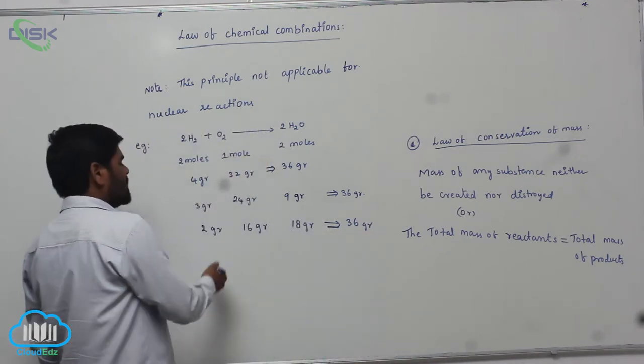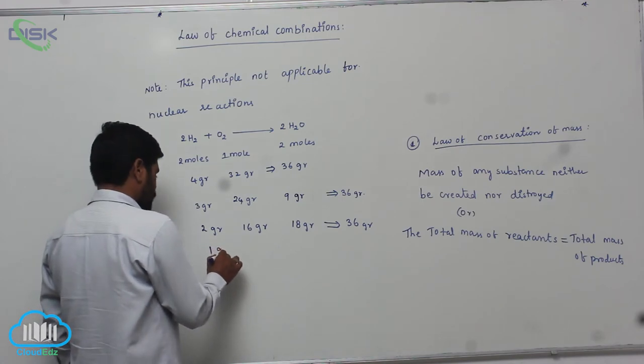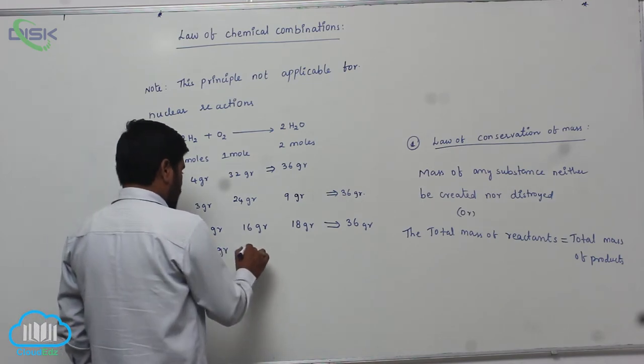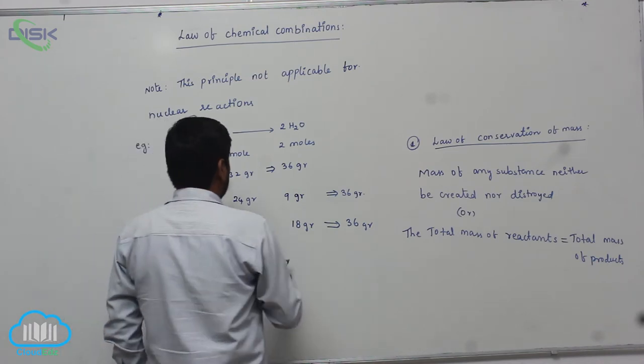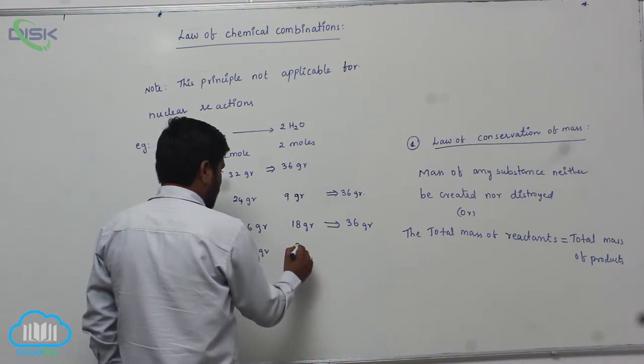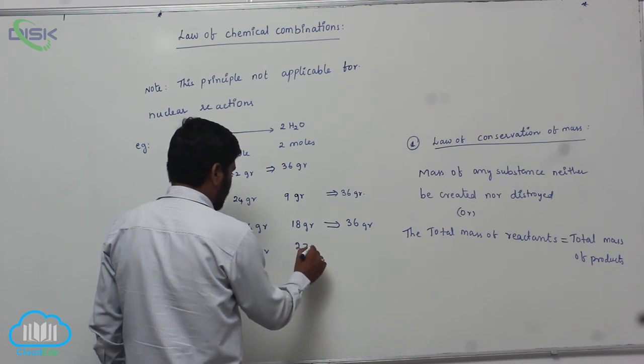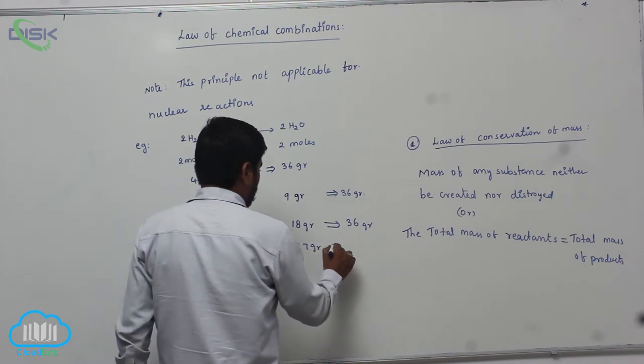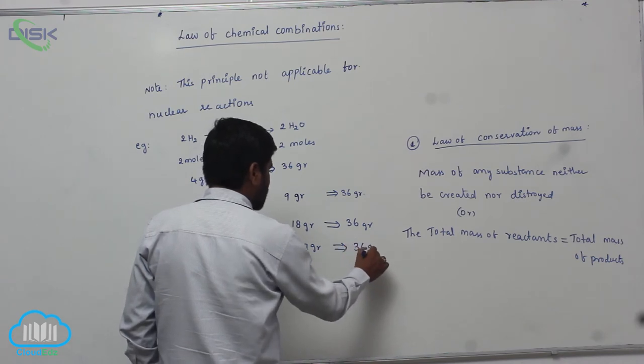So like this, if you are taking 1 gram of this, it becomes what? 8 grams. So therefore, it becomes what? 27 grams. So now, total it becomes which one? 36 grams.